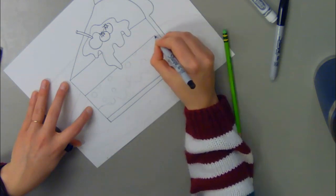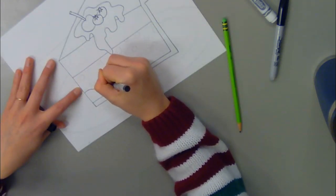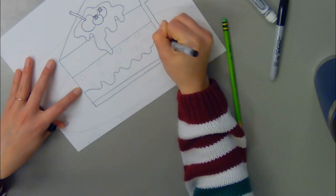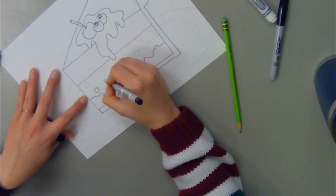So for this first step, I'm outlining all of my shapes and lines, everything I drew in pencil. I'm actually going to completely erase all of my pencil when I'm done.